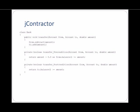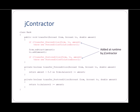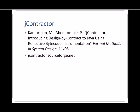When JContractor instruments a function, it inserts code to check pre- and post-conditions. JContractor actually manipulates the compiled Java bytecode, but the instrumentation is shown here in source code for simplicity. The JContractor implementation is described fully in a paper that I wrote with Dr. Marat Karorman. The software is open source and is available from SourceForge.